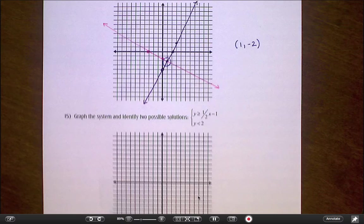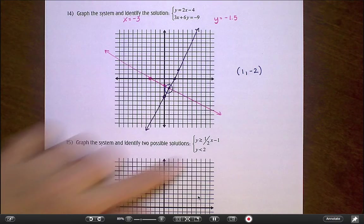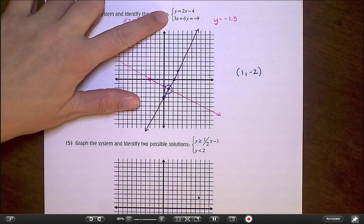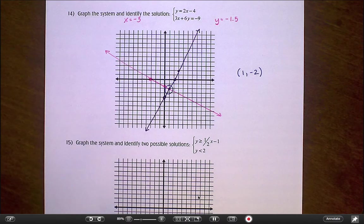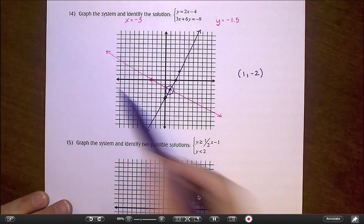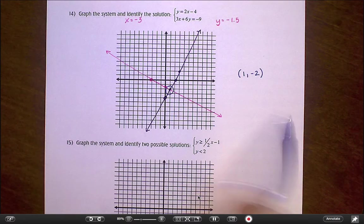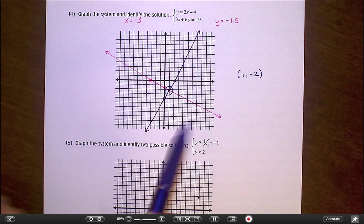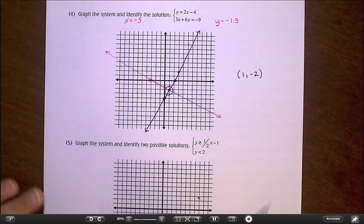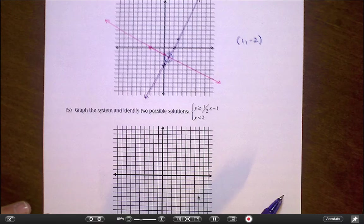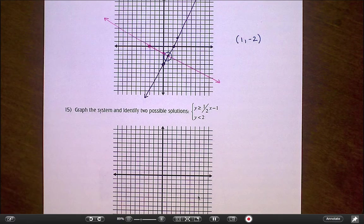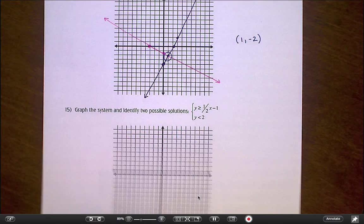So 15 is another graphing one, but I want you to look at the difference between this problem and this problem. This problem was all equal signs. Everything was just equal to. And that means I'm just dealing with lines, no shading, no overlap of any kind. These ones have inequalities in them. That means these are going to be lines but also have shading involved. And then what I'm really looking for is the set of numbers that get shaded by both inequalities.